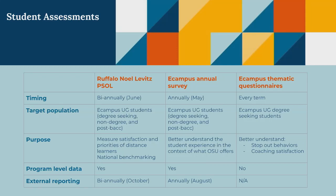The Ruffalo Noel Levitz survey we'll run bi-annually — we did it for the first time last June. It focuses on all eCampus undergraduate students: degree-seeking, non-degree, and post-bac. It measures satisfaction and priorities in a distance learning environment, gives us national benchmarking data, and allows us to report back at the program level to degree programs across campus, usually in the fall.